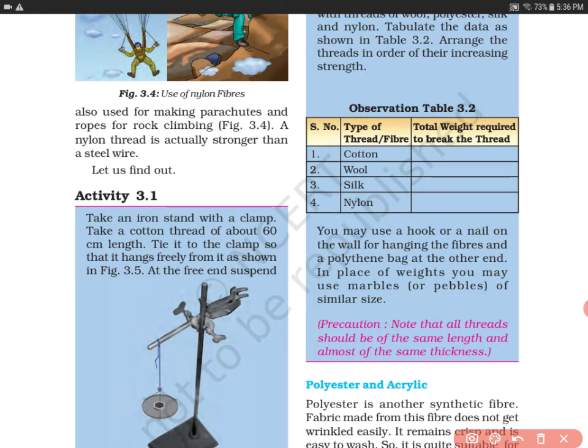In the observations, if you add weight you will see cotton will be the first to break, supposedly at about 12 grams. Wool breaks at nearly 70 grams, silk at 50 grams, and nylon at 100 grams. This activity shows that nylon is the strongest fiber among these fibers.